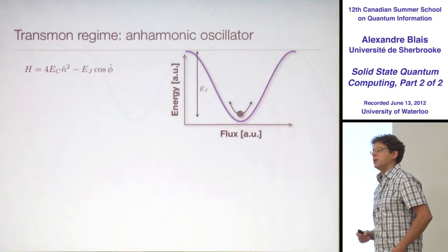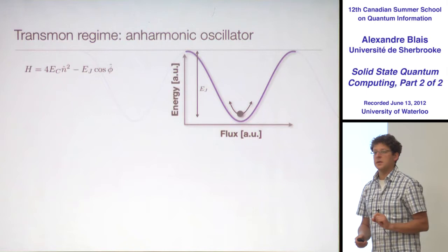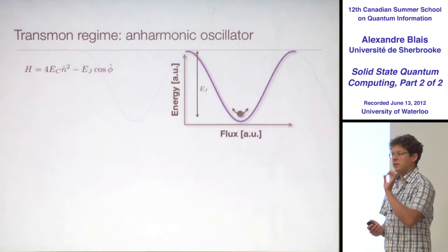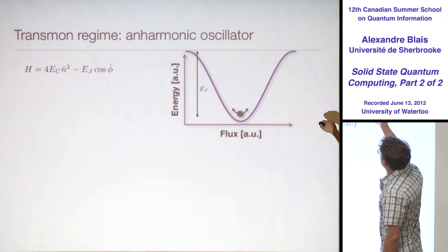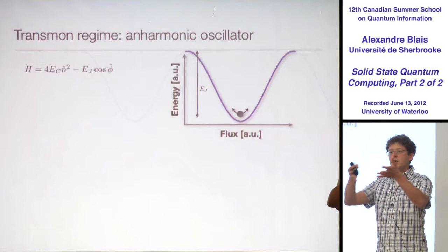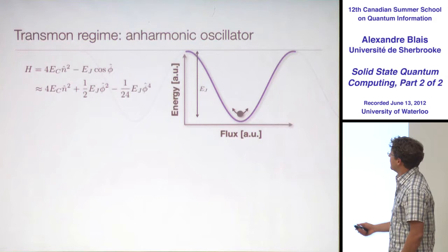What we do here, however — because EJ is large with respect to EC — this value is large, such that the particle is stuck, basically, in one well. The oscillation is small; it has just a tiny oscillation at the bottom of the well. As a result, you can forget that you have this cosine, because the particle never has enough energy to explore it. So we'll do a Taylor expansion of the cosine and just carry the first correction.